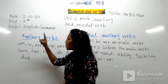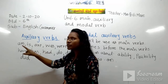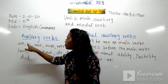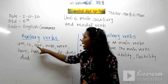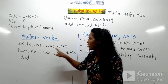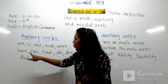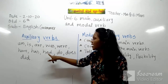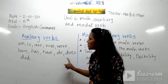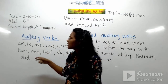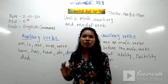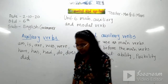So which are the auxiliary verbs we have seen? They are: am, is, are, was, were, have, has, had, do, does, did. These are the auxiliary verbs we have already covered.